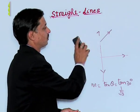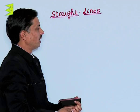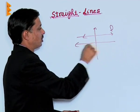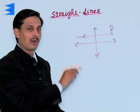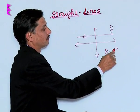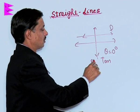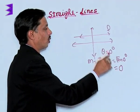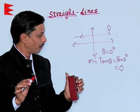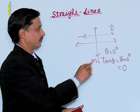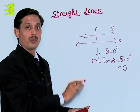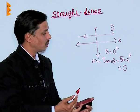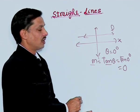If a line is parallel to the X-axis, it will never meet the X-axis, so theta is 0 degrees. This gives M = tan(0°) = 0. We must remember this important result: if a line is parallel to the X-axis, its slope will always be 0.